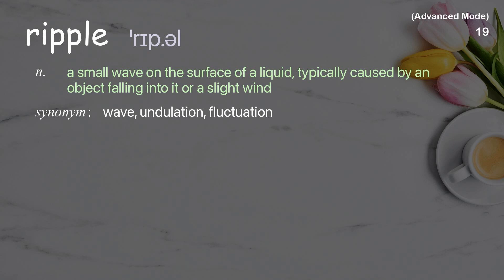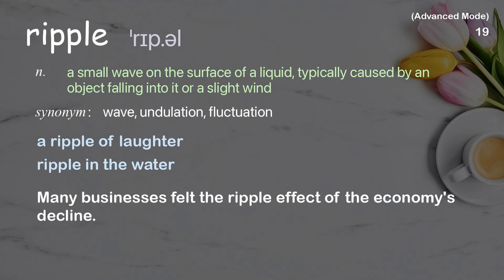Ripple. A small wave on the surface of a liquid, typically caused by an object falling into it or a slight wind. Examples: A ripple of laughter. Ripple in the water. Many businesses felt the ripple effect of the economy's decline.